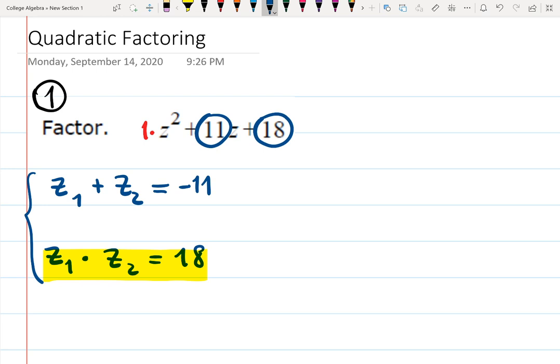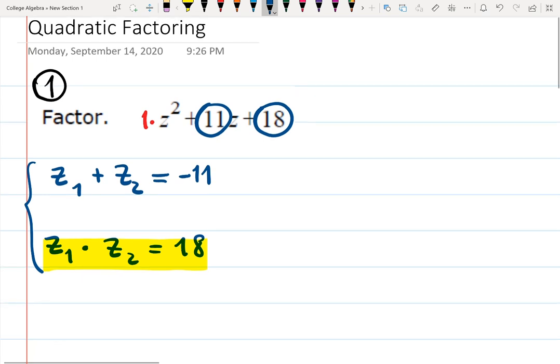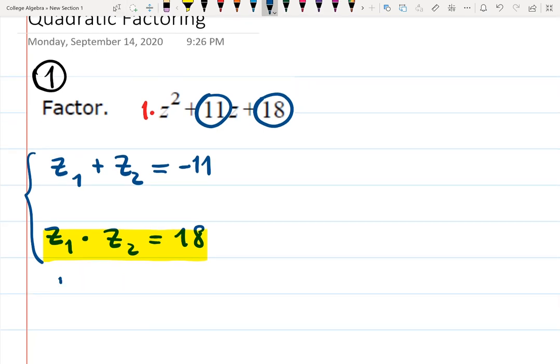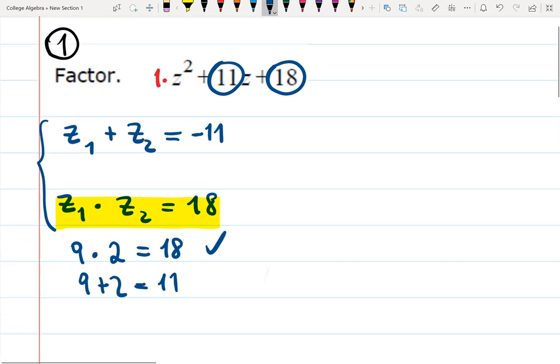9 plus 2 is 11. I just need to figure out the signs. So I know that 9 times 2 is 18, and 9 plus 2 is 11. So one checkmark is done, but the second one should be fixed. How to fix it?